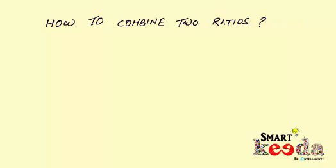Now, what is the n rule in ratio and proportion? Let's understand this. Let's assume that there are two different ratios. The first one is A is to B, the terms of which are 2 is to 3.